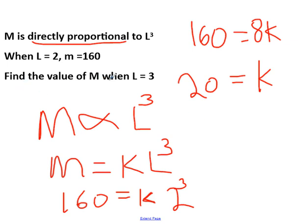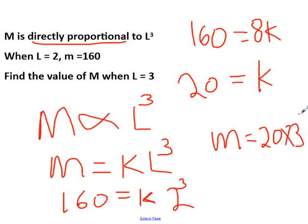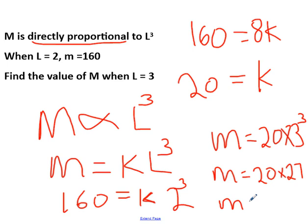We are asked to find the value of m when l is 3. So m equals k times l cubed — our k is 20, and now l is 3, so we put times 3 cubed. Our m becomes 20 times 27. Therefore, m equals 540. This is a real GCSE exam question, and this is what you should be getting.